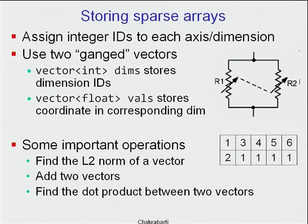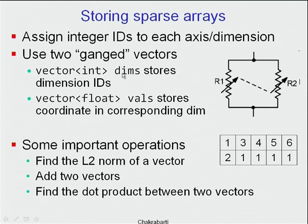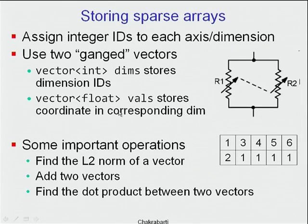We assign integer IDs to every dimension — the token IDs. We use two gang vectors: a vector of ints (dims) storing dimension IDs, and a vector of floats (vals) storing the coordinate in the corresponding dimension. In general scientific applications, the vals array will usually be floats or doubles, as you may normalize vectors, add and subtract, or multiply by constants.